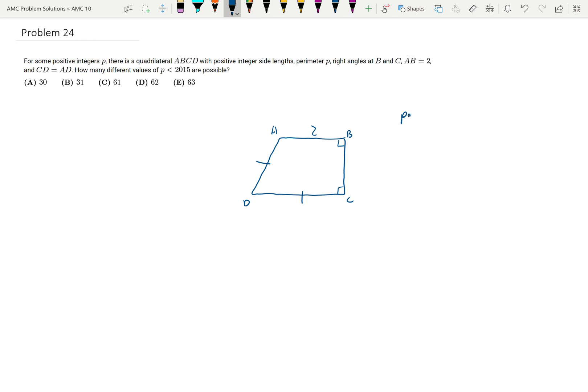So what I'm going to do first, just remember, perimeter is equal to P. So first I'm going to drop this side down. And let's just call that X. And so now this is 2. And I'm going to call this AD, we'll call that Y. And so this side length is going to be Y minus 2. Because DC is equal to AD.